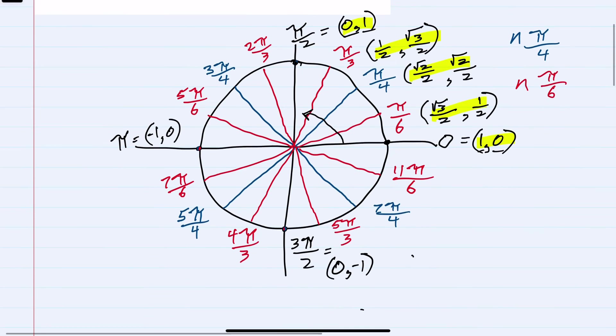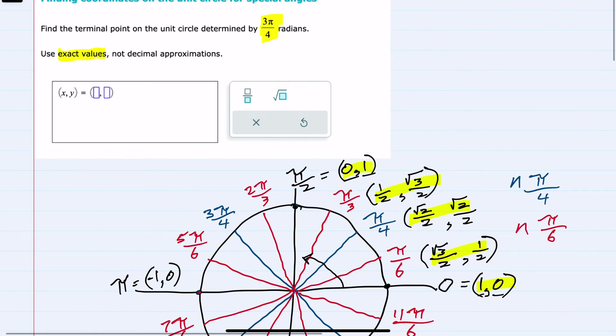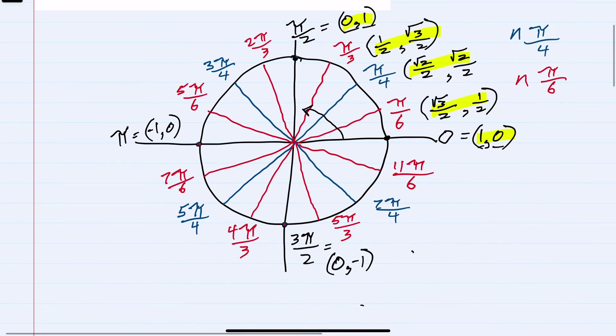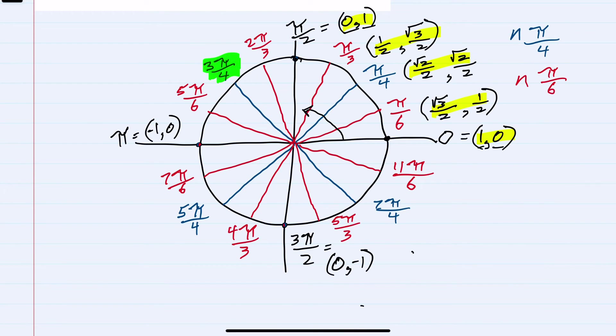From here, I'm going to look back and see that we were looking for 3π/4 radians. So this is the one that we're looking for. I can see that that's the mirror image of π/4.